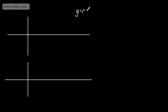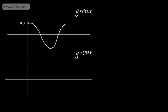For y equals cos x, we start at 0 comma 1, so we have a maximum at 0 with a value of 1. We come down to 90 degrees, then down to the minimum at minus 1. This is cos x between 0 and 360 degrees, with key points at 0, 90, 180, 270, and 360 degrees.